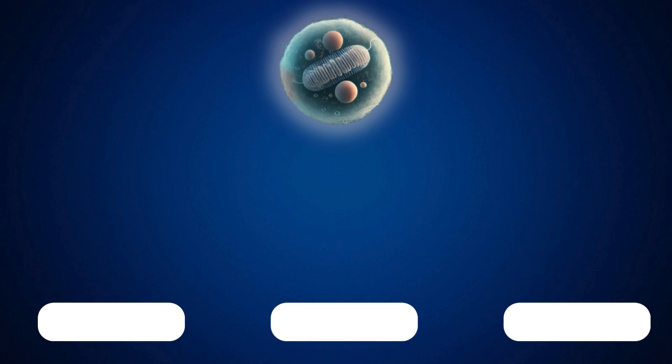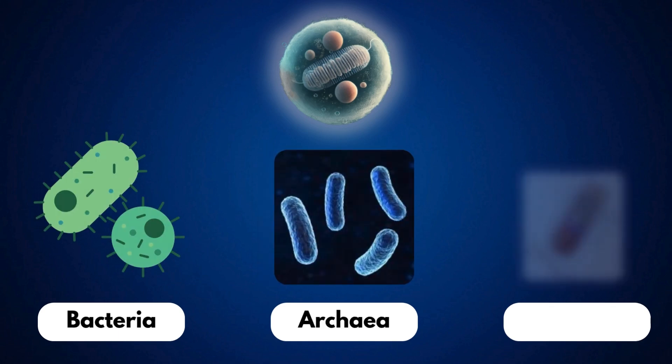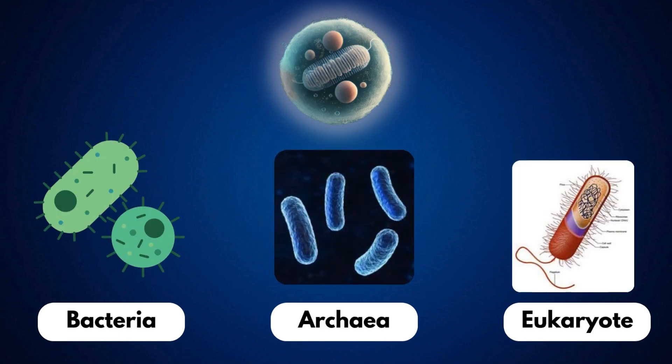From LUCA, life branched into three major domains: bacteria, archaea, and eukaryotes, the group that includes plants, animals, and humans.